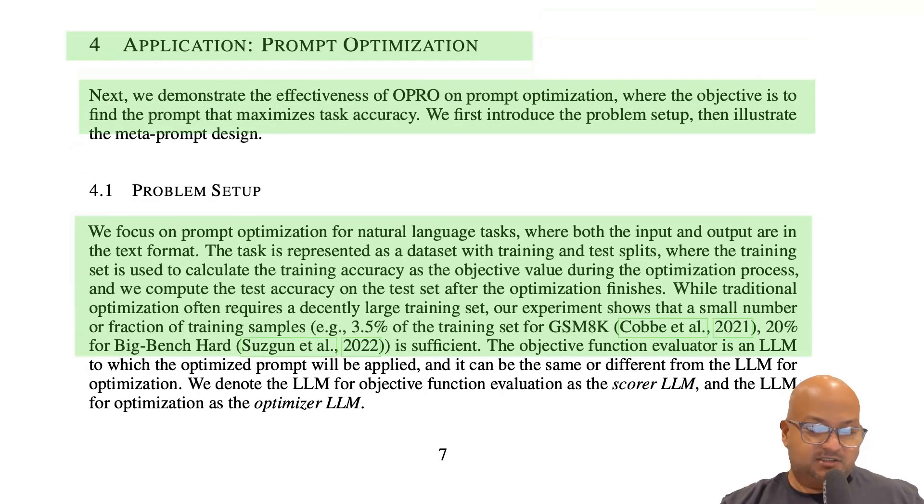So that was just the warm up. Those were two somewhat contrived examples to show that you can frame optimization problems in natural language and then use an LLM with a meta prompt to iteratively explore the solution space to find a global optimum. Now they come to applying it to a more relevant problem, one that doesn't have a good closed form solution. And that problem is to find a good prompt for various LLM tasks.